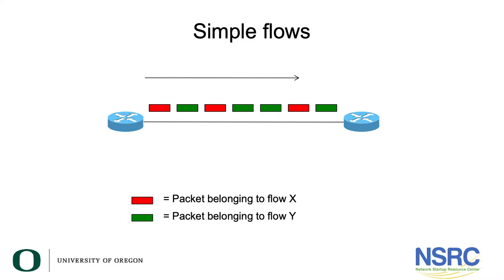Let's have a look at a simple flow. The slide shows a series of packets running between two routers. Some packets are red, other packets are green. The red packets belong to flow X and the green packets belong to flow Y, making up a simple flow running between the two routers.